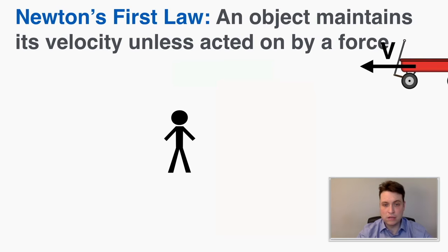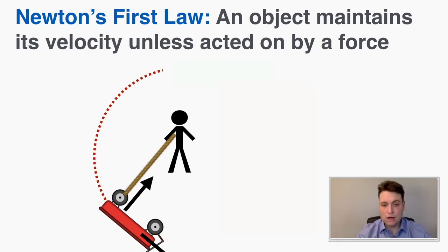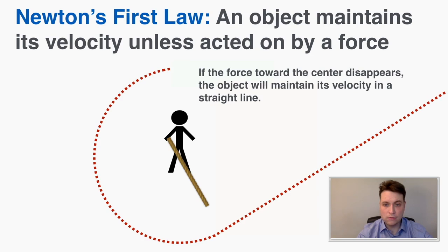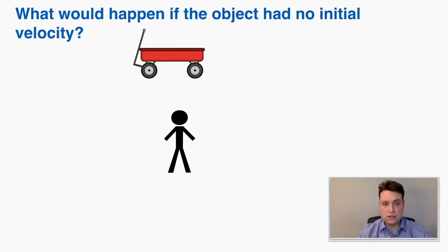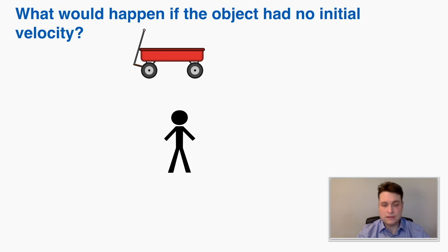So if that force from you disappears at any point, the object is just going to continue off with whatever velocity it had in the moment that you let go, in whatever direction it had. And if the object had no initial velocity and you apply this force to it, it would just be dragged toward you without any circular motion — it's just moving toward you.